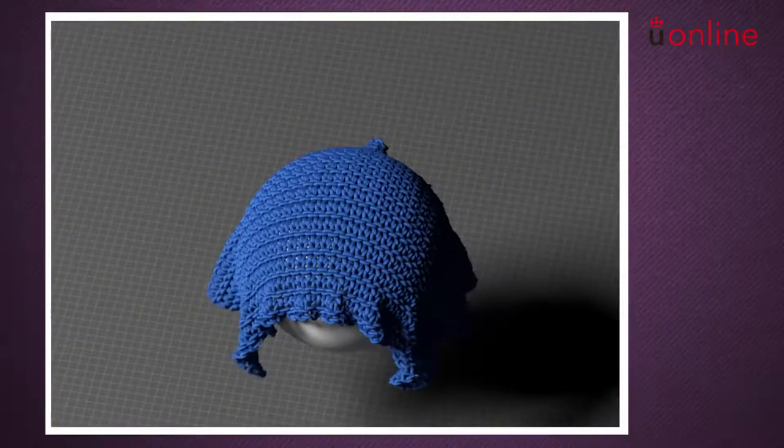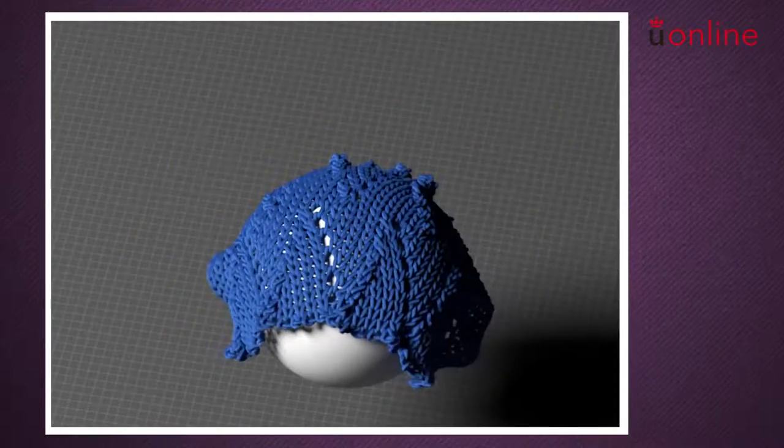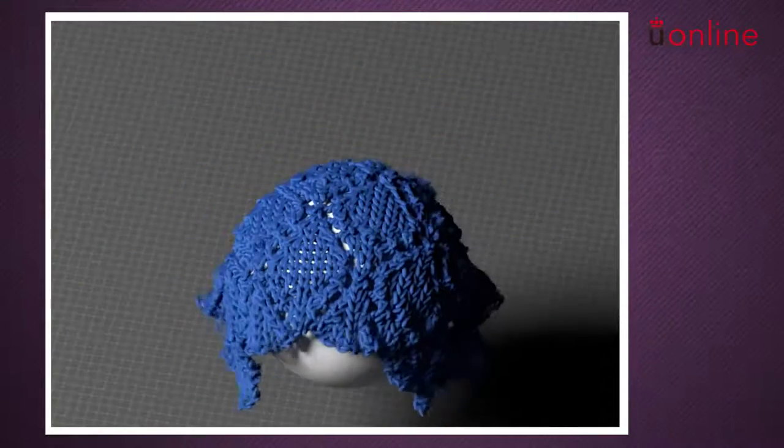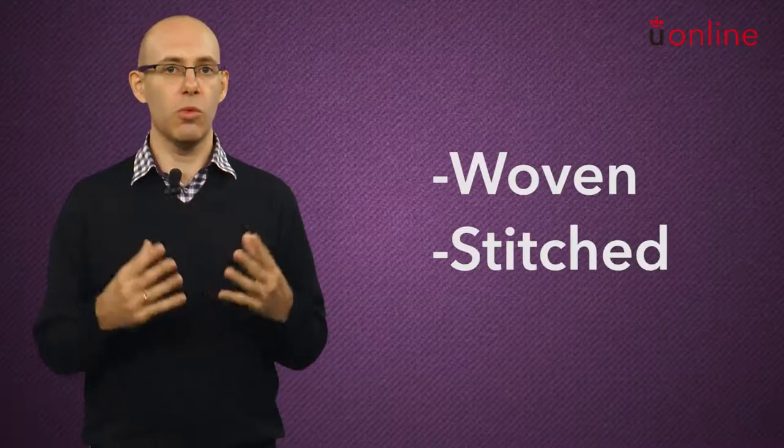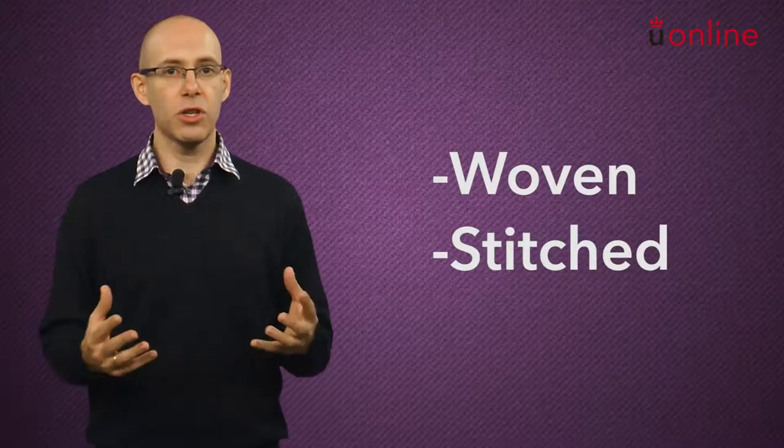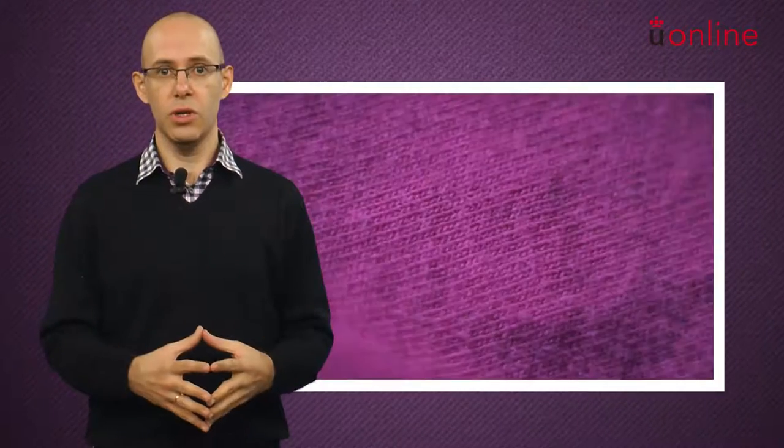We represent fabrics using yarns, and we compute all the forces that appear when yarns touch each other and deform. Because we model the material of the yarns and the way in which yarns are woven or stitched, fabrics of different types behave naturally as they should. A cotton knit, such as a t-shirt, is stretchy, but a cotton weave, such as jeans, is stiff.